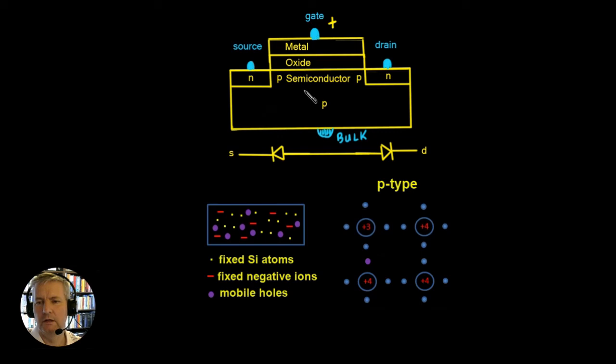When we apply a voltage from the gate to the bulk substrate we get an electric field. This electric field then attracts the electrons which changes the conductivity just below this layer which allows the current to flow from one end of the device to the other end of the device.